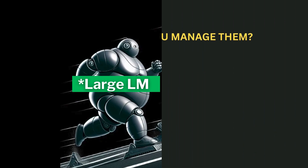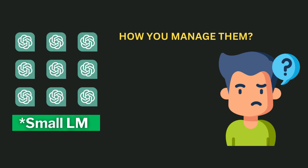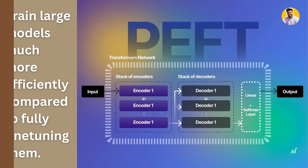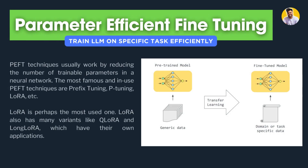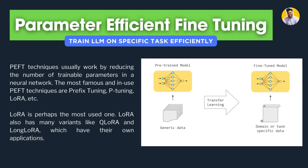If we are going to build multiple smaller models, those are also very hard to handle. That's where the technique called Parameter Efficient Fine-Tuning (PEFT) comes in. This technique changes the way you fine-tune large language models. PEFT works by reducing the number of trainable parameters in a neural network. The most famous and widely used techniques are prefix tuning, P-tuning, LoRA, and QLoRA — with LoRA and QLoRA being the most commonly used for fine-tuning on a specific task.